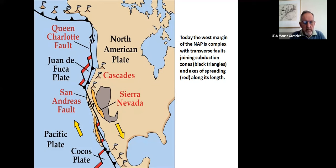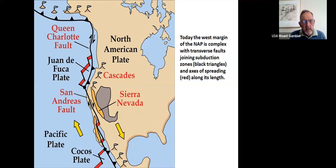As we come further south, we meet another triple point and a new plate appears — the Cocos Plate — which is more or less the equivalent of the Juan de Fuca Plate. It's the eastern half of the Pacific Ocean in that region, with the Pacific Plate occupying most of the oceanic area, and the Cocos Plate just being inserted, or remnant — it hasn't yet subducted beneath the North American Plate.